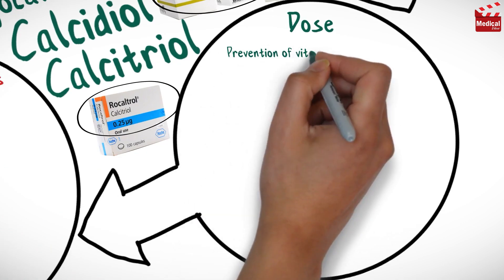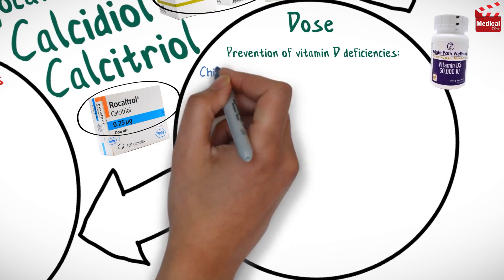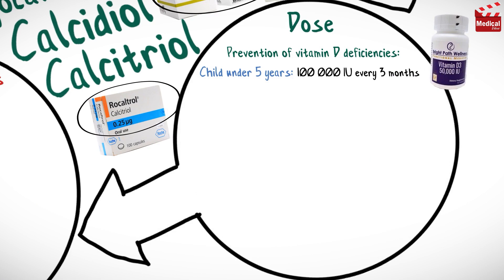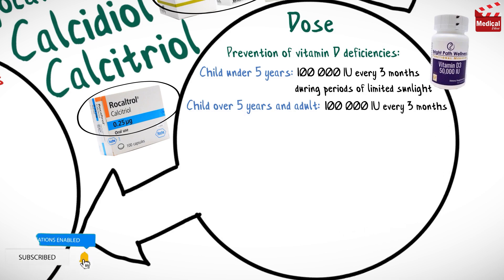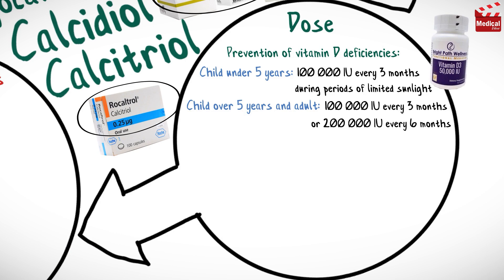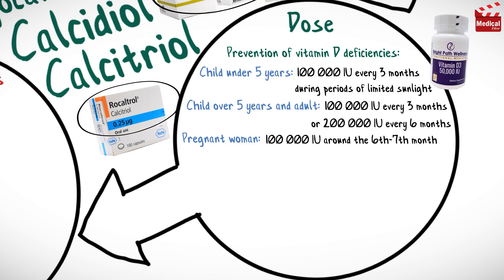The usual dose for prevention of vitamin D deficiencies, when using 50,000 IU tablet or capsule: for children under 5 years, 100,000 IU every 3 months during periods of limited sunlight. For children over 5 years and adults, 100,000 IU every 3 months, or 200,000 IU every 6 months. For pregnant women, 100,000 IU around the 6th or 7th month of pregnancy.